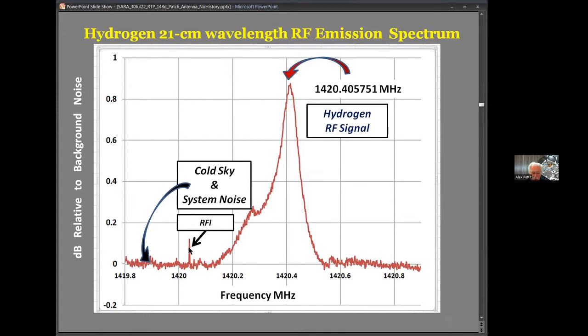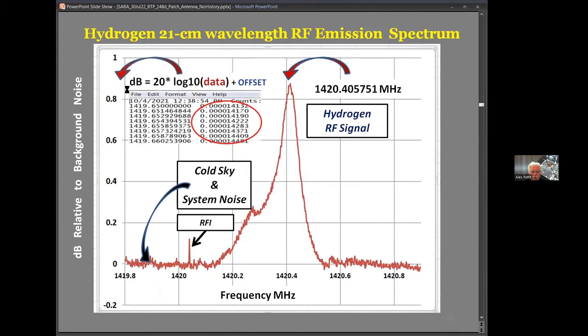I wrote a MATLAB script that will grab a sequential number of labeled files, so this process works really well. The data is stored in linear units, so you have frequency amplitude pairs that even with Excel you can plot. You wind up with some RFI noise, cold sky and system noise, and your hydrogen signal. I've been converting the amplitude to a dB scale. The correct equation is 20 times the log 10 of this data plus an offset. You just pick an offset to set the background level to zero so you can see what your signal level is relative to background noise.